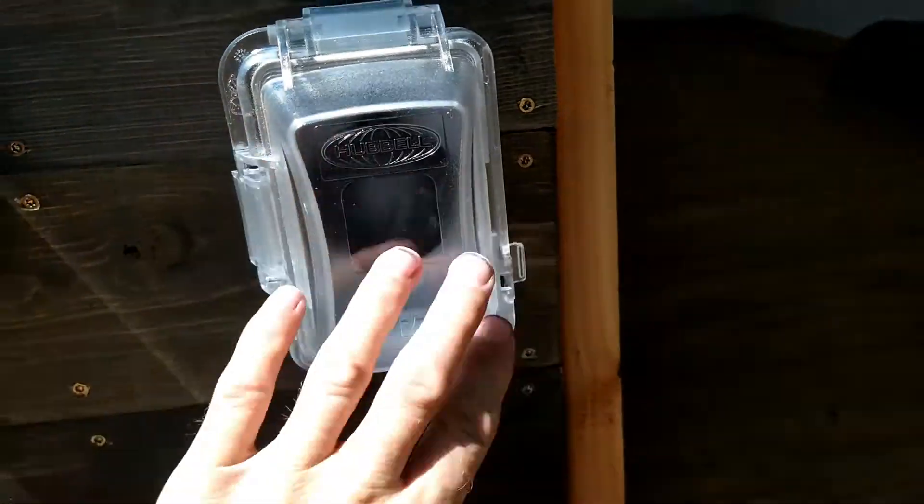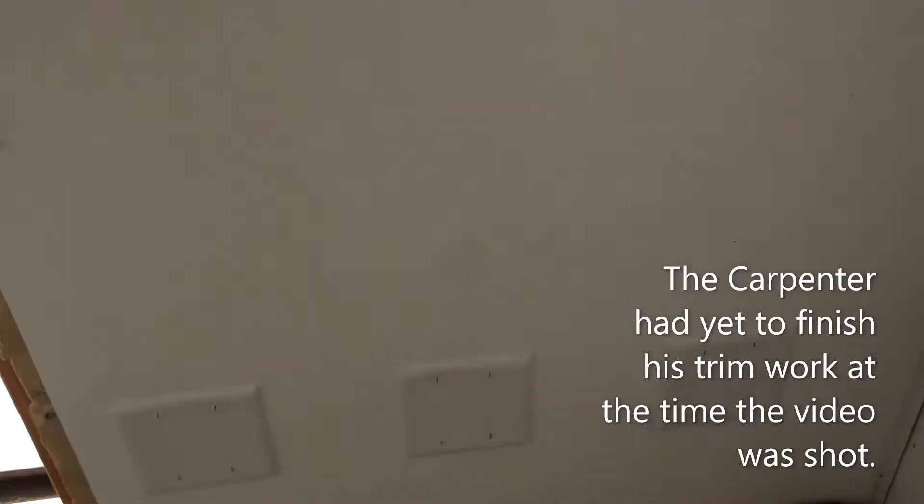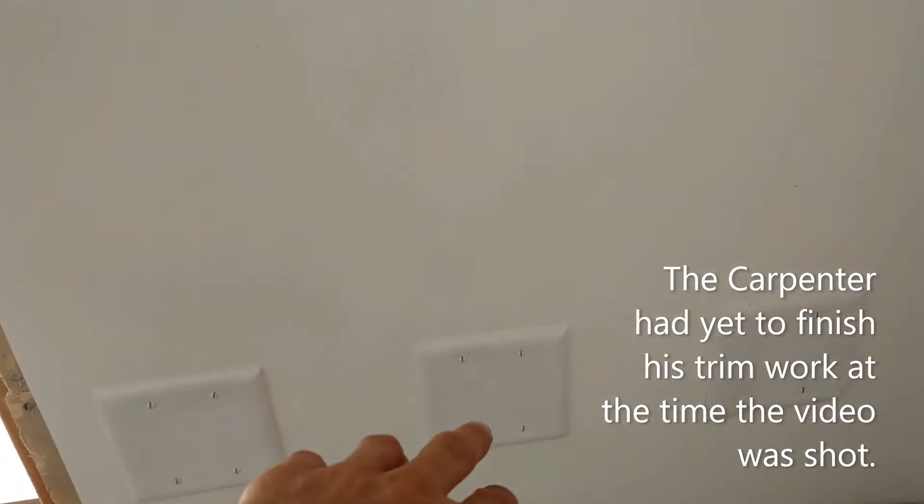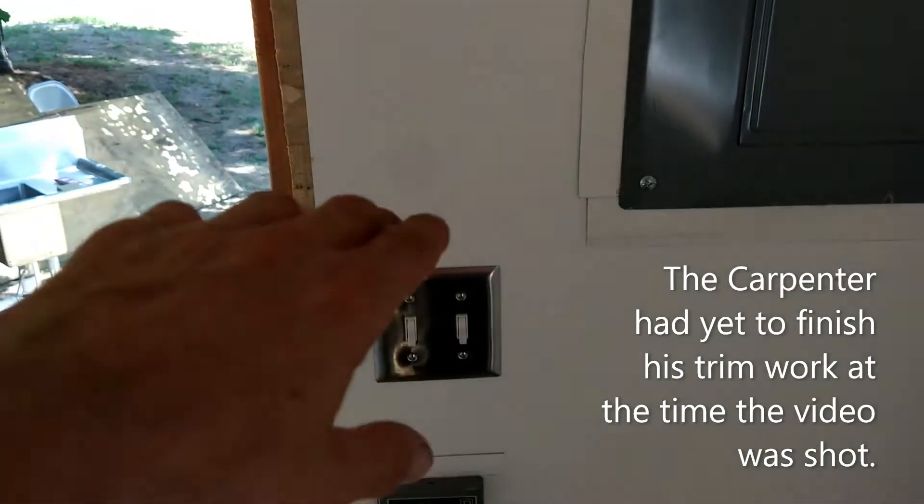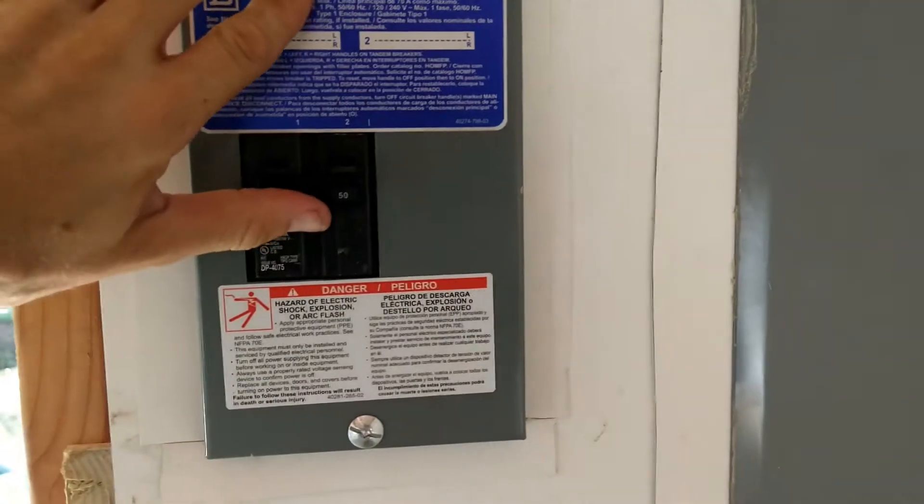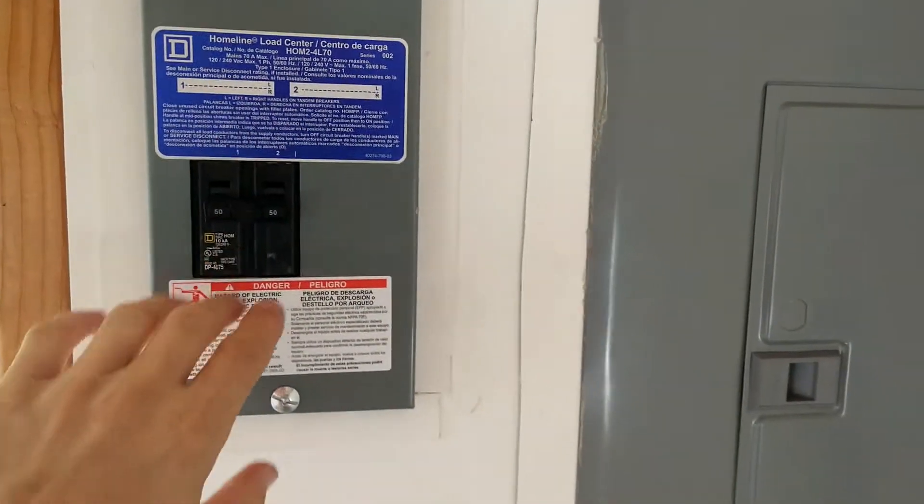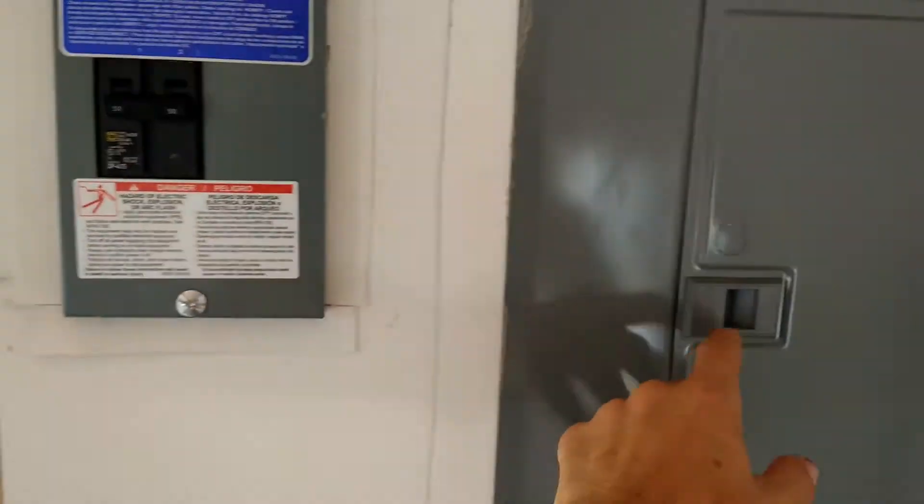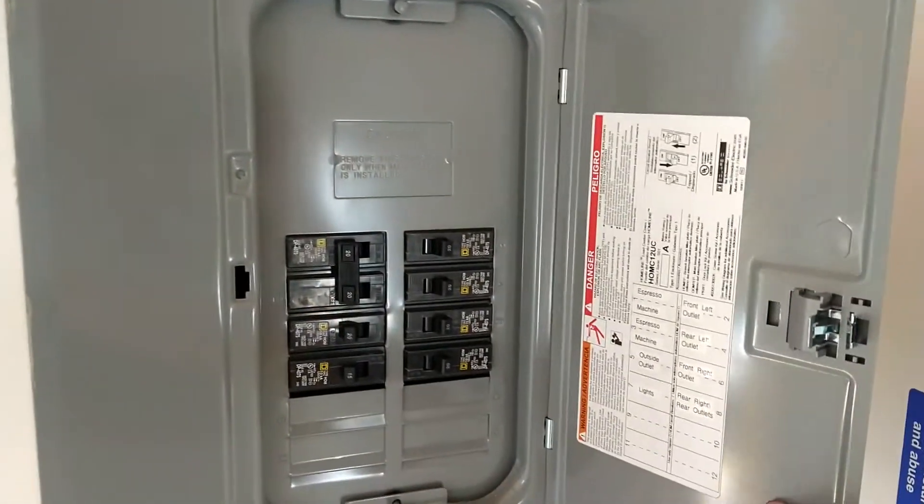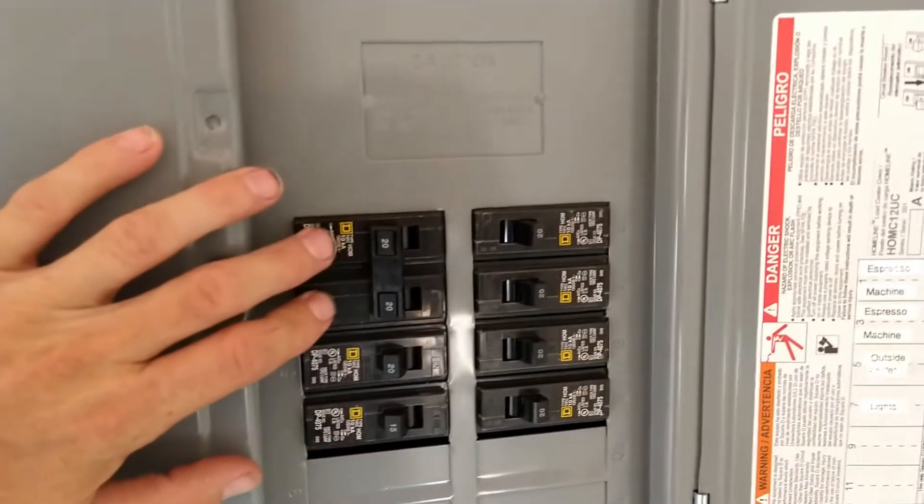Inside, 50 amp comes in behind here, runs up to the disconnect - Square D, this I think was a 70 amp disconnect. 50 amp main breaker in here feeds this panel. It's going to be a coffee food truck.